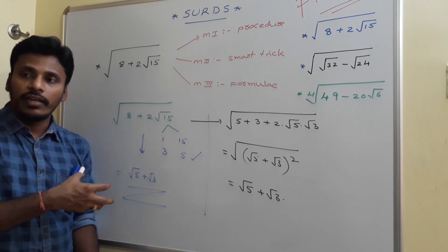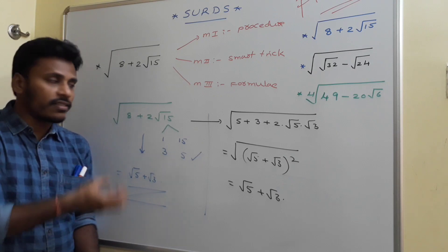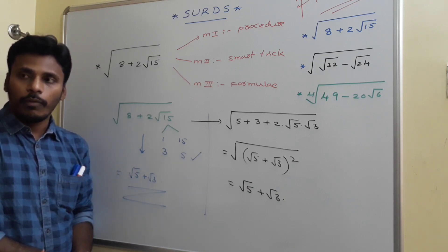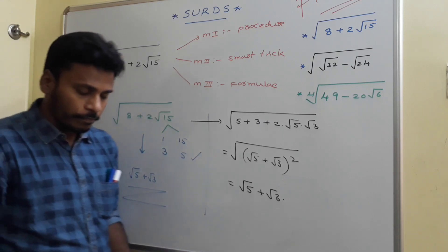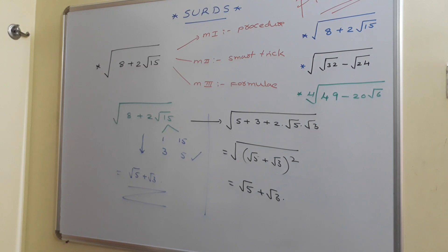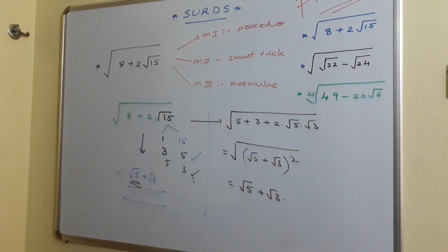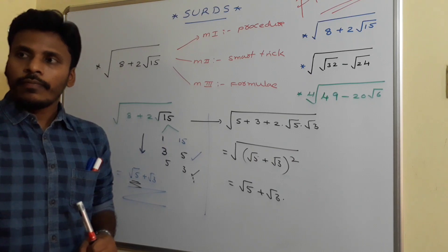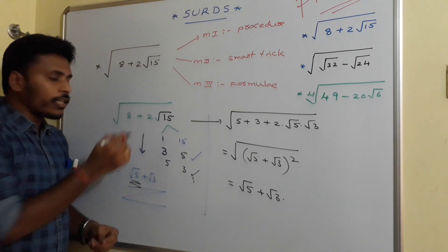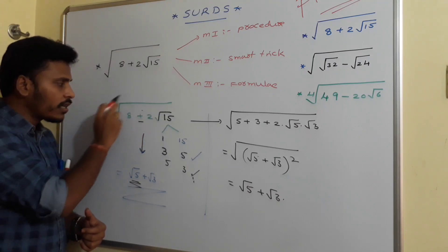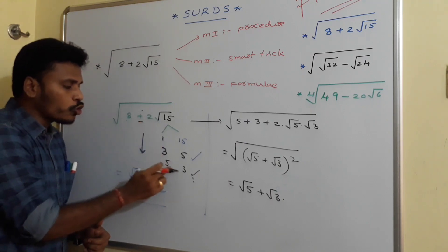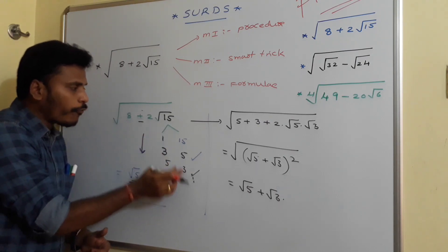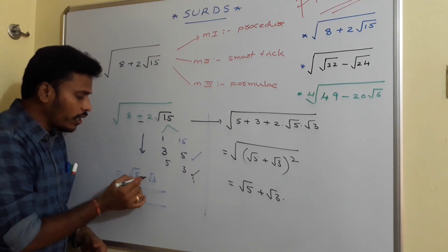If the expression has a minus sign, like square root of 8 minus 2 root 15, you still choose the same pair: product equals 15 and sum equals 8, so choose 5 and 3. But the answer becomes root 5 minus root 3, because the minus sign carries through. So 5 plus 3 minus 2 root 15 equals root 5 minus root 3, whole square.